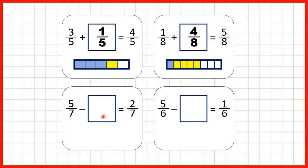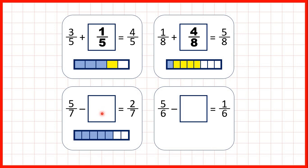Now let's move on to missing fraction subtraction problems. So 5/7 minus what is equal to 2/7? We can show 5/7 as 5 parts out of 7, and we know that something has been taken away to leave us with only 2/7. The 2/7 we're left with can be shaded in blue, and then we can see what's been taken away — it's the 3/7 that we have in yellow.